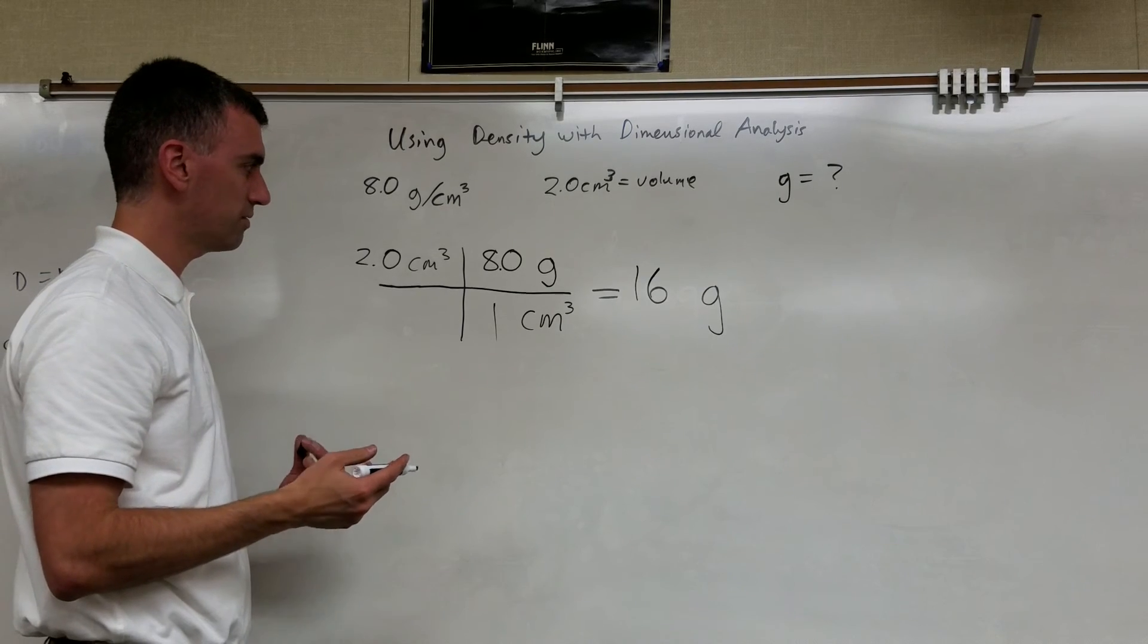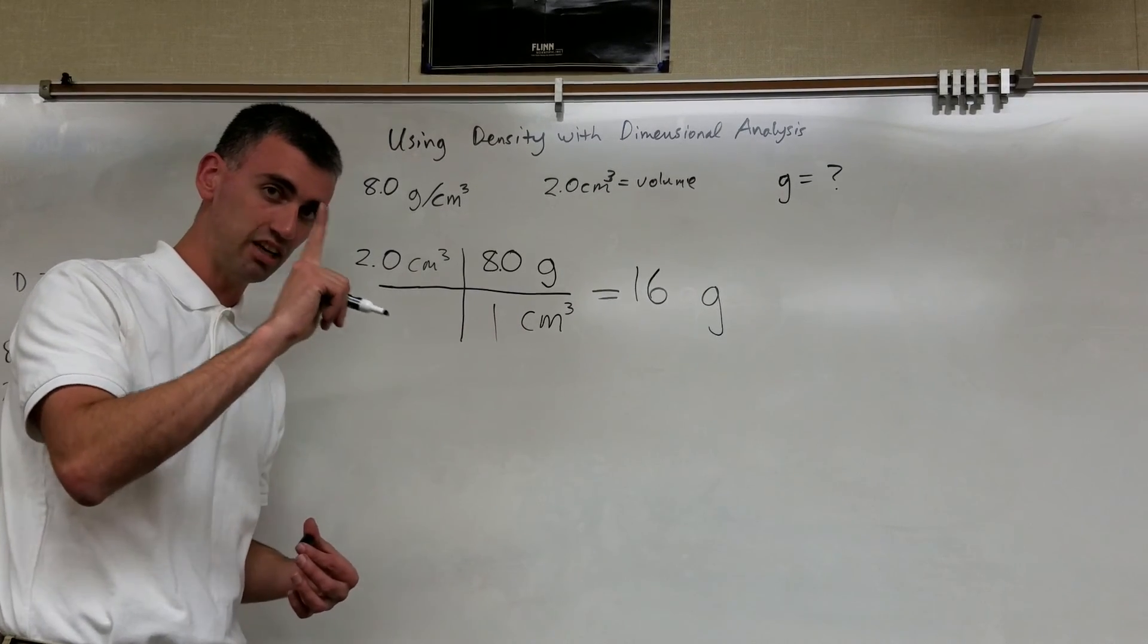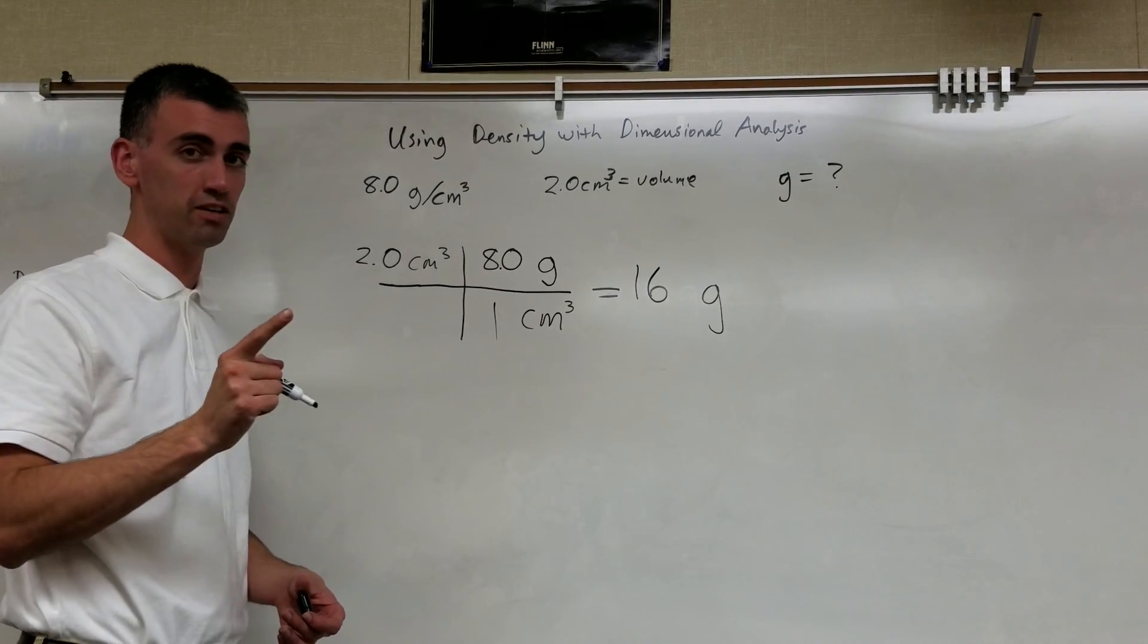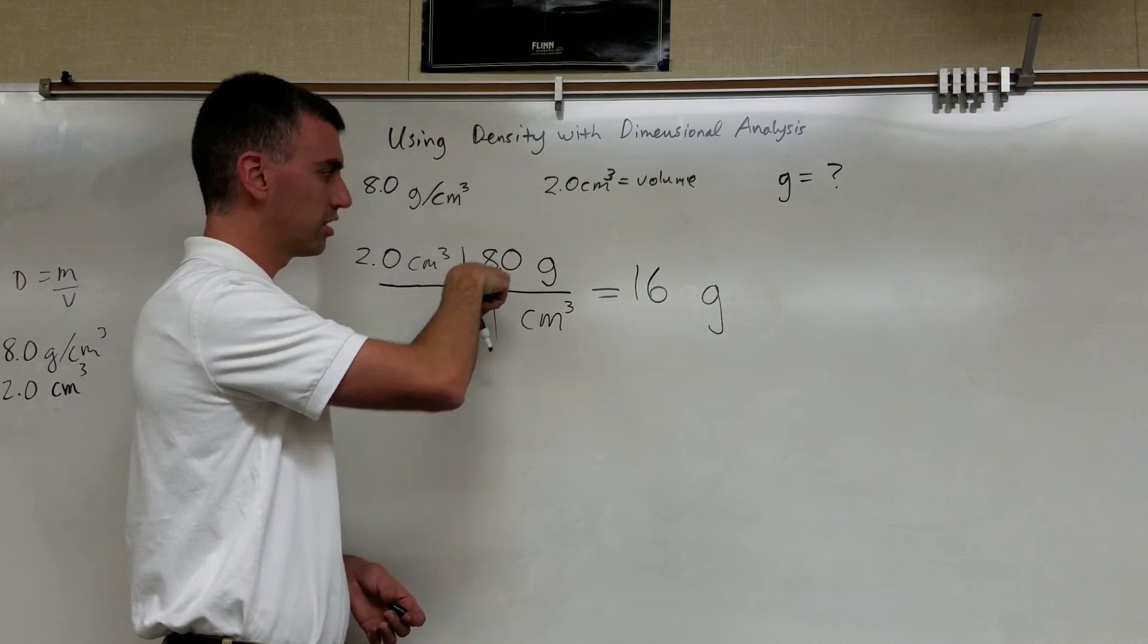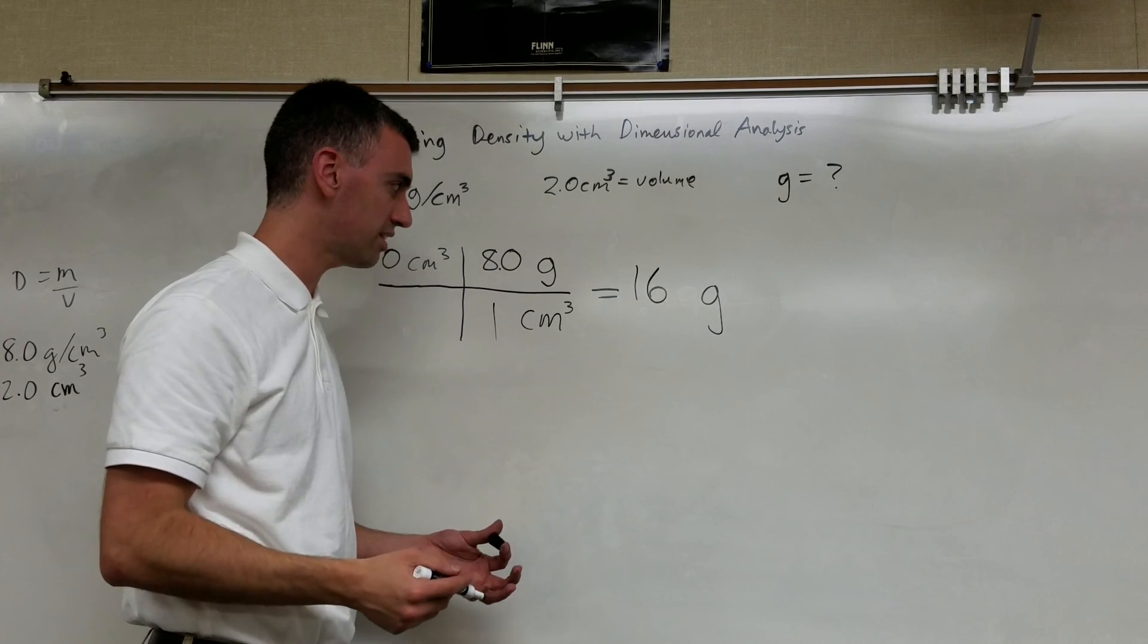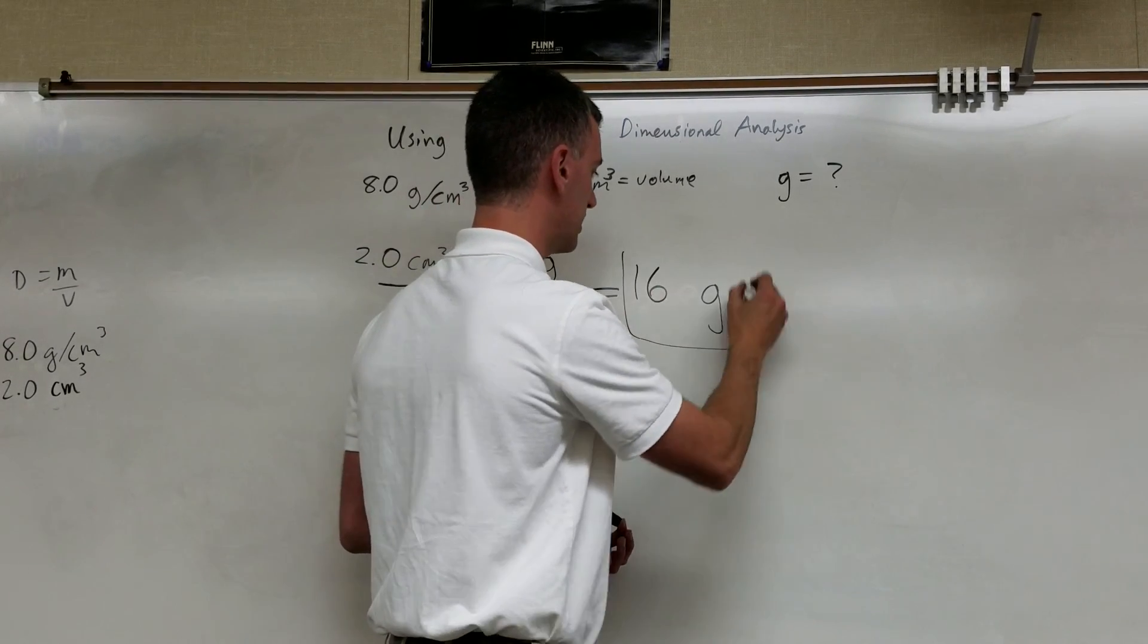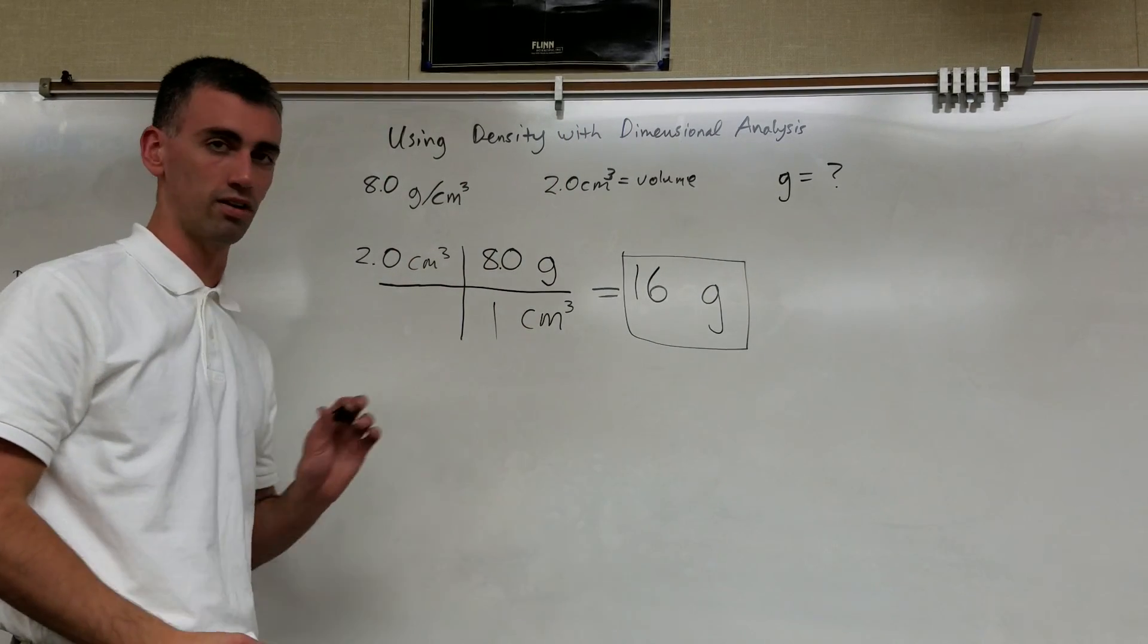So that takes care of it. I've got the grams, I've got the unit I want in grams. The last thing I need to check on, does it have the correct number of significant figures? Two sig figs, two sig figs, two sig figs. So therefore, I don't need to round anything or add any decimals in there. I'm going to say whatever this object is, based on its density and its volume, it has a mass of 16 grams and call it good with that.